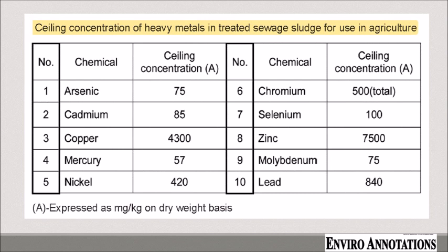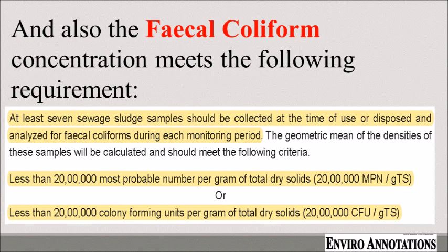You can see the values mentioned here. The ceiling concentration is expressed in milligram per kg on dry weight basis. The parameters are: arsenic 75, cadmium 85, copper 4,300, mercury 57, nickel 420, total chromium 500, selenium 100, zinc 75, molybdenum 75, lead 840.